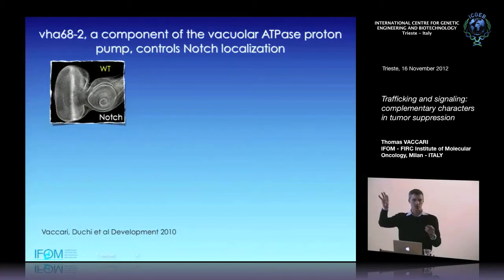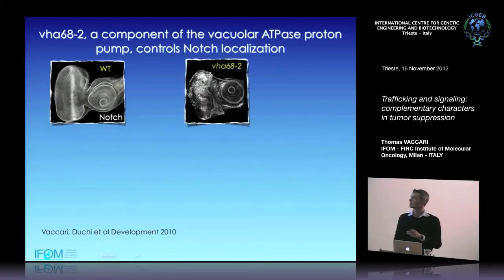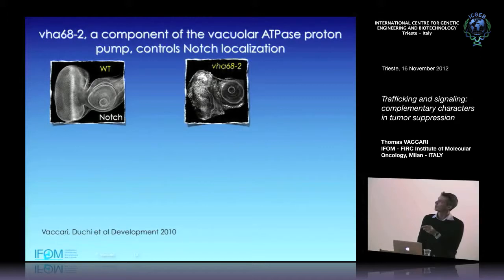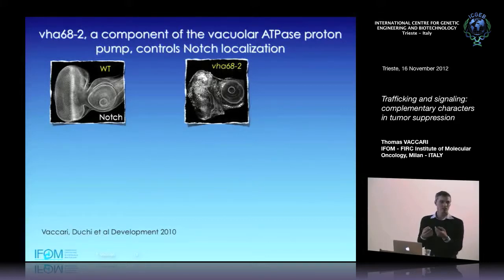We made mutants by chemical mutagenesis and allowed development of larvae, looking only at mutations affecting the eye-antennal disc. We found things like this: in a big portion of the epithelium there is much more Notch, and Notch seems to be not in the folds but inside the cells — clamped inside the cells.